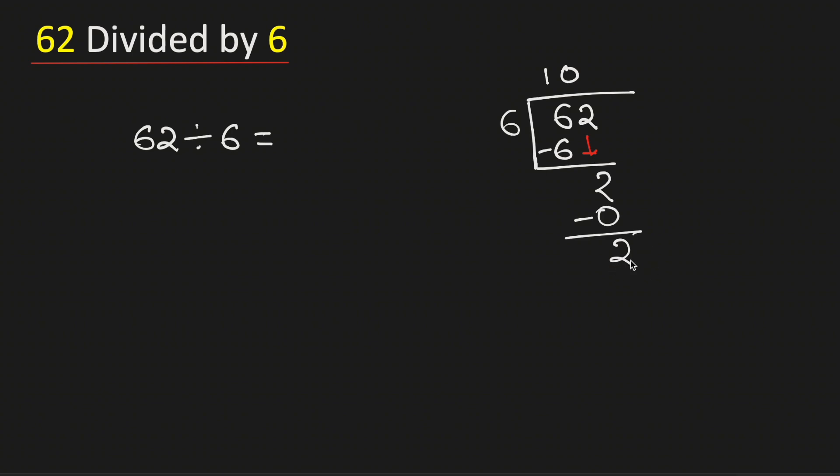Now in this case, see that 2 is less than 6, and we haven't brought down any number here. To divide it, we need to put a decimal here so that we can borrow one 0.